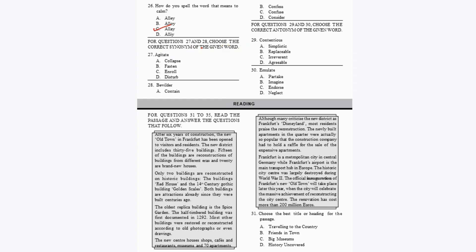For questions 27 and 28, choose the correct synonym. Question 27: 'Agitate' means to irritate or disturb somebody — option D. Question 28: 'Bamboozle' means to puzzle or confuse somebody, so the correct synonym is option C: 'confuse.'